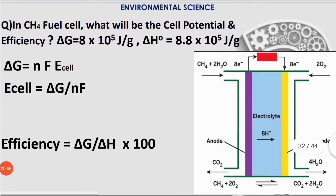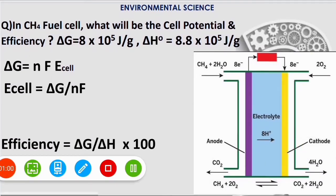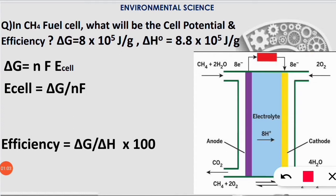To solve this question, we have to remember the Gibbs free energy formula: ΔG = nFE_cell. Here, ΔG is the Gibbs free energy, F is Faraday's constant, E_cell is the cell potential which is asked in the question, and n is the number of electrons transferred.